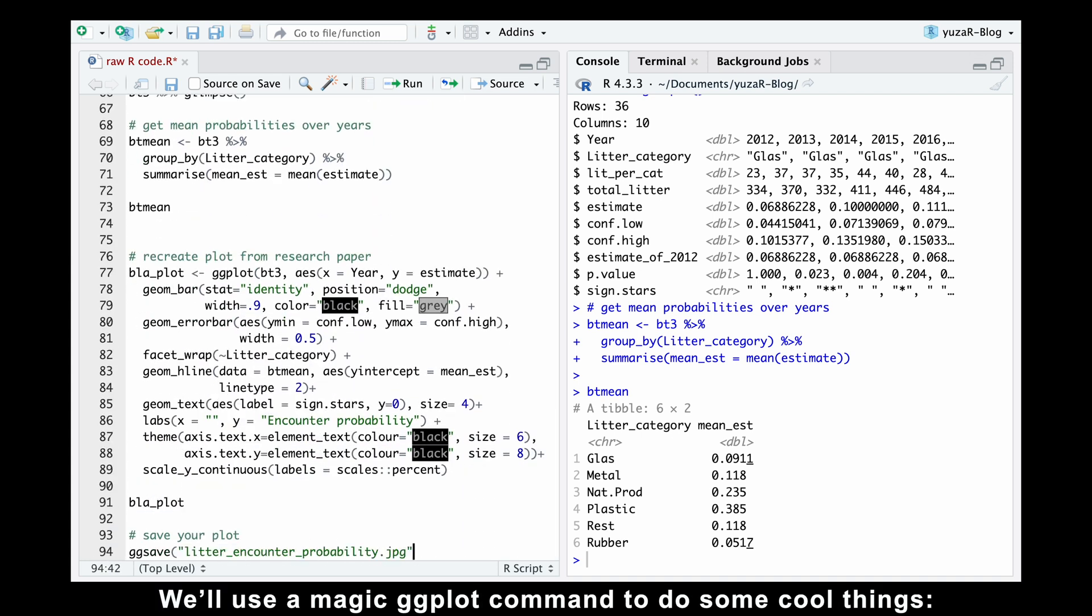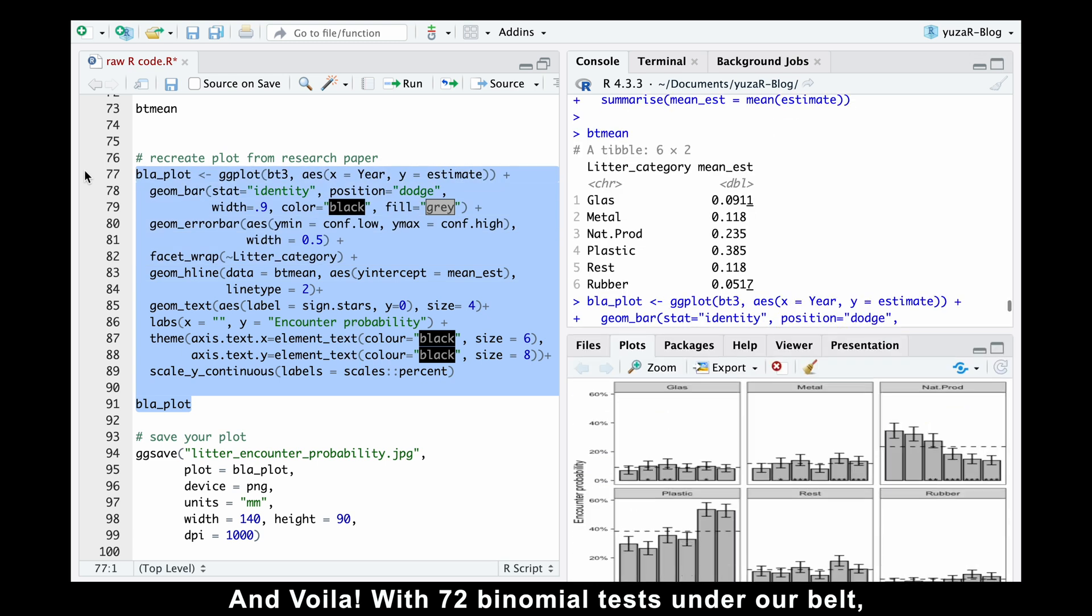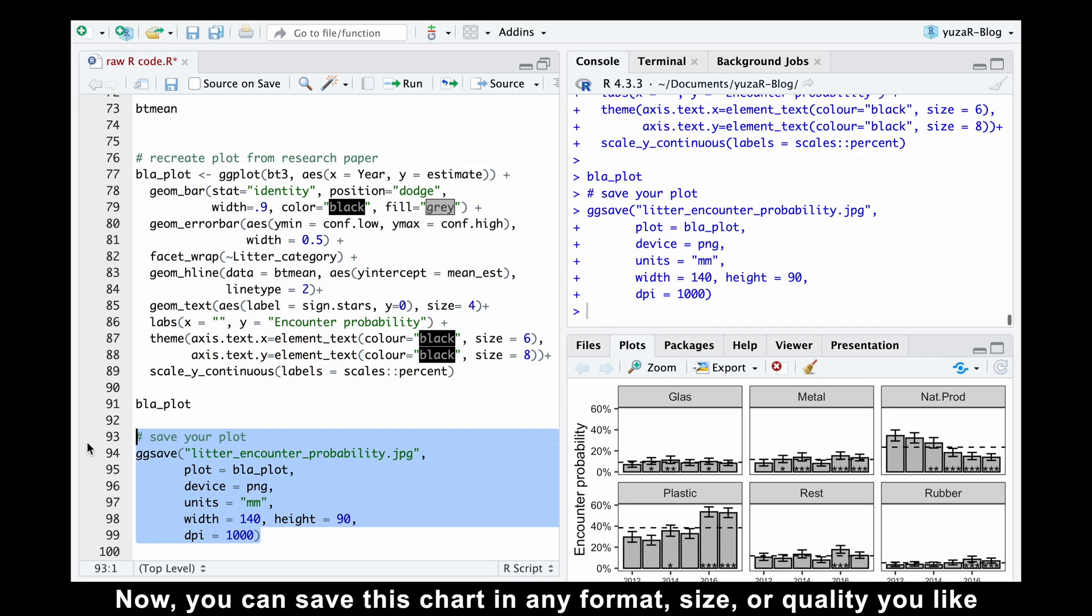We'll use a magic ggplot command to do some cool things. First, we'll put the years on the x-axis, like a timeline. On the y-axis we'll show the estimated probabilities of finding each litter category, along with their confidence intervals. Think of them like error bars. To keep things organized, we'll use a function called facet_wrap to create separate plots for each litter category. This way we can see what's happening with each type of litter over time. We'll also add a horizontal dashed line to show the average percentage of litter across all the years. And finally, to highlight any significant changes, we'll use the geom_text function to add litter star symbols directly on the plot. And voila! With 72 binomial tests under our belt, we've recreated the plot from the research paper. Now you can save this chart in any format, size, or quality you like with the pragmatic ggsave function.